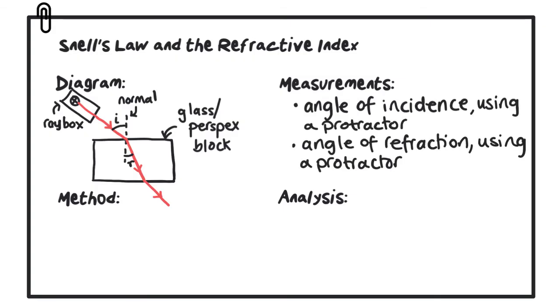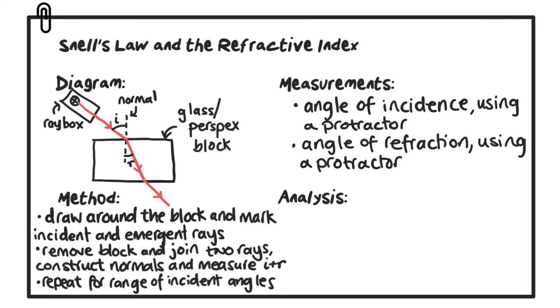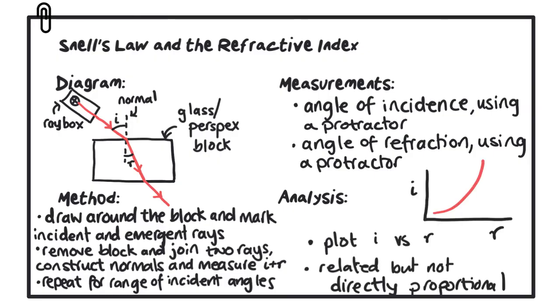There are two key measurements that we take in this experiment: the angle of incidence and the angle of refraction - both of those require a protractor. In order to obtain those results, what we do is we draw around the glass block and we mark on the incident and the emergent rays. We then remove that block and join together the two rays. We construct the normal and measure the angle of incidence and the angle of refraction. We repeat that process for a range of angles of incidence and angles of refraction.